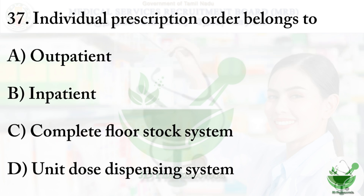Question number 37: Individual prescription order belongs to — option A outpatient, option B inpatient, option C complete floor stock system, and option D unit dose dispensing system. The correct option is option B, inpatient.